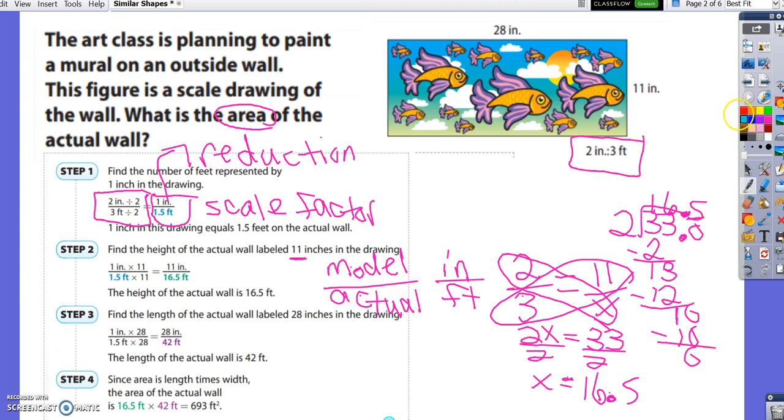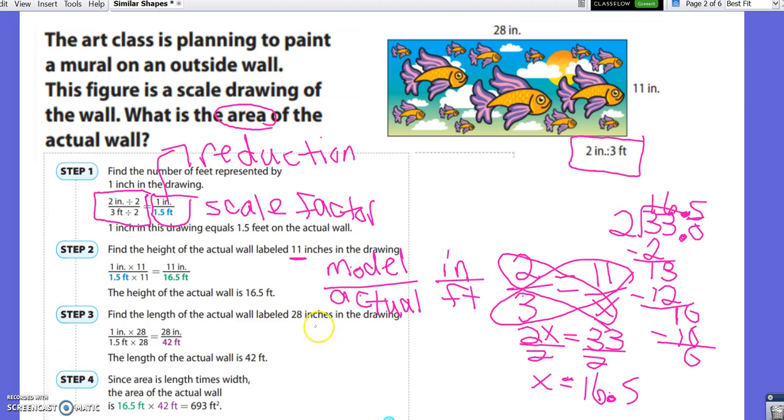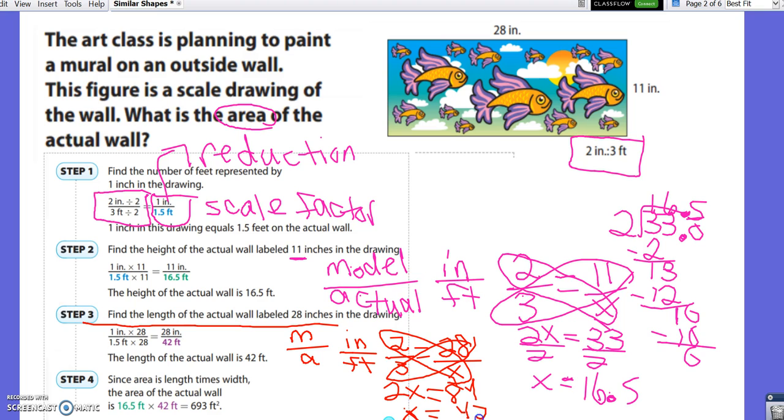Now we need to find the length of the actual wall. It's labeled 28 inches in the drawing. So we're going to set up another proportion. Model over actual, inches over feet. For every 2 inches in the model, it's 3 feet in the actual. The length of the wall is 28 inches, and we're trying to find the length of the actual wall. So we solve our proportion. We get 2x. 28 times 3 is 84. And when we divide 84 by 2, we get 42. So the length of the actual wall is 42 feet.